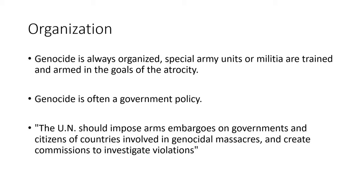After dehumanization, the genocide has to become more organized — special armies or militias are trained to carry out the goals of this atrocity. Genocide is often a government policy, meaning a government is actively deciding to eliminate a group of people. At this stage, the UN would need to impose arms embargoes on these governments and create commissions to begin investigating what is happening.